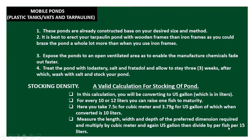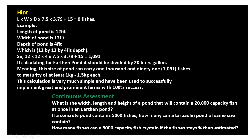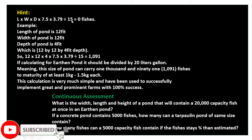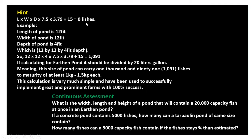The formula is: length × width × depth × 7.5 × 3.79 ÷ 15 liters = number of fish. Let's see an example: length of pond is 12 feet, width of pond is 12 feet, depth of pond is 4 feet.